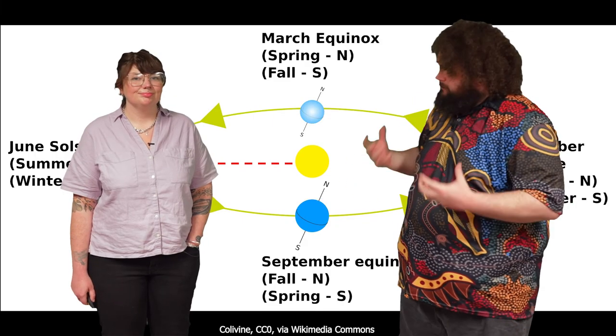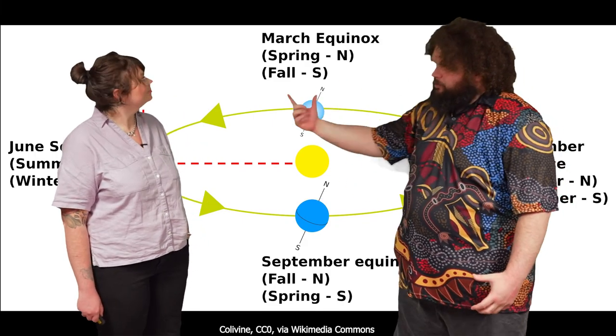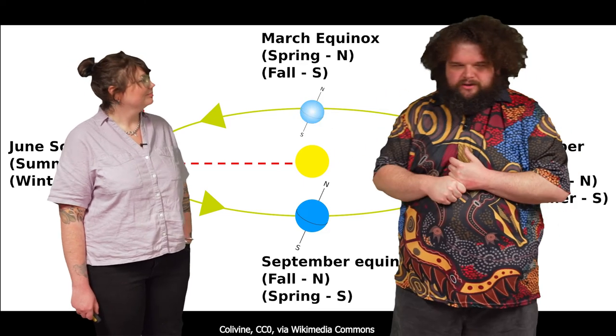And so then following on from this, then as we're moving in an orbit around the Sun, different hemispheres change which are getting more sunlight and which are getting less sunlight. And that means that each hemisphere will experience something different throughout the year. So that's where we get those different seasons from.